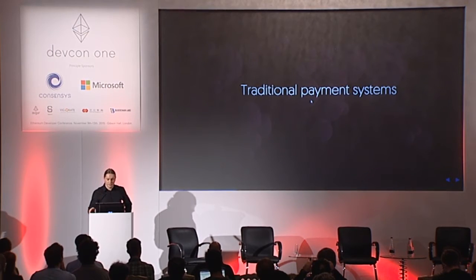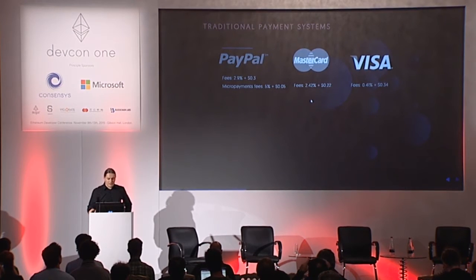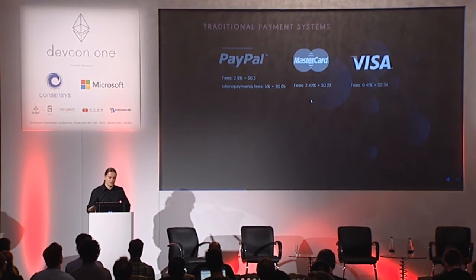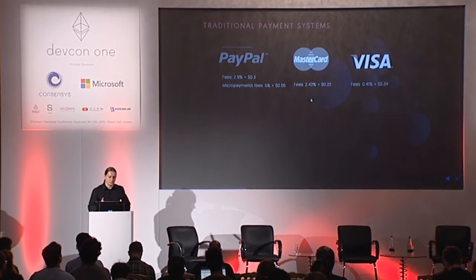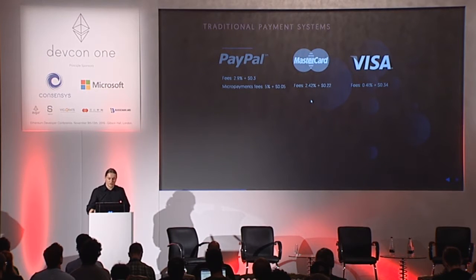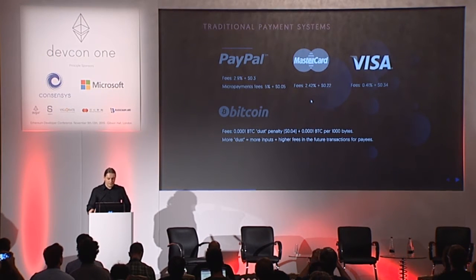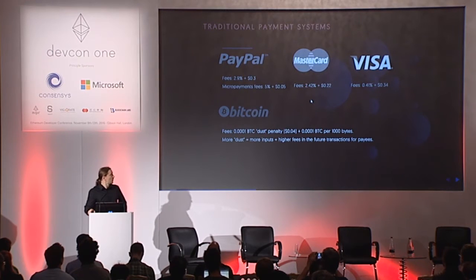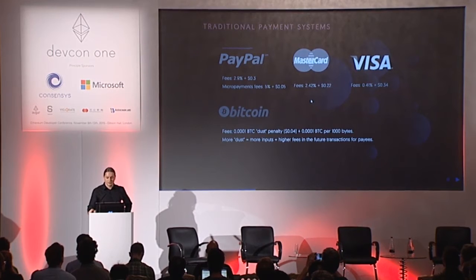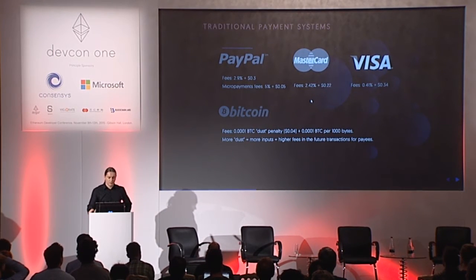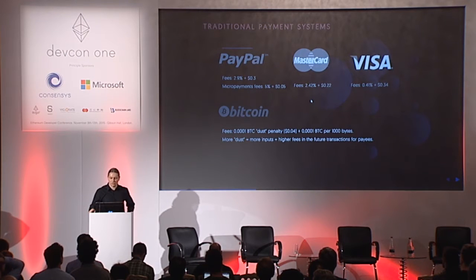Why do we believe existing solutions miss the mark? Well, traditional payment systems are simply too costly and require trusted central authorities. Bitcoin can up to some point solve our problem, but it requires additional payments for dust transactions, there are penalty fees for many transactions in one block, and you have to pay additionally for large blocks. We also believe additional logic would be implemented in a contract attached to Golem, which makes Bitcoin a bad choice and Ethereum the right one.